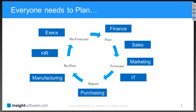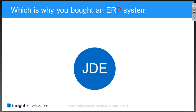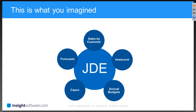So everybody needs to plan, which is probably why you bought an ERP system — the P in ERP stands for planning. And this is probably how you imagined it would all work: that you'd have a JD Edwards system that would incorporate headcount planning, annual budgets, capital expenditure, depreciation, forecasting, sales. Everything would just be integrated.